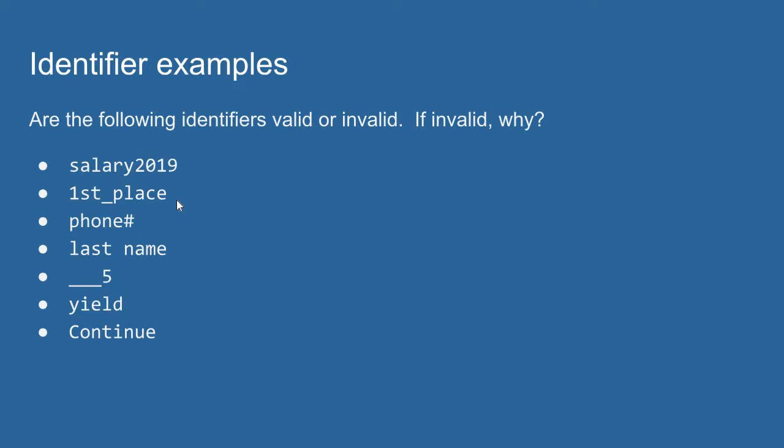Let's look at the next one, first place. This identifier has all the valid characters, but it begins with a number. So this is an invalid identifier.